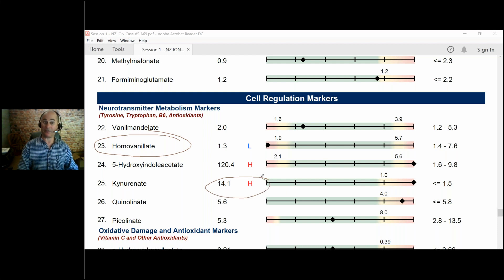Or high kinurinate, which means there's a lot of inflammation in the brain. So this test looks in detail at vanillylmandelate, homovanylate, hydroxyindoleacetate—these are markers for serotonin, dopamine, epinephrine, norepinephrine, the major neurotransmitters.